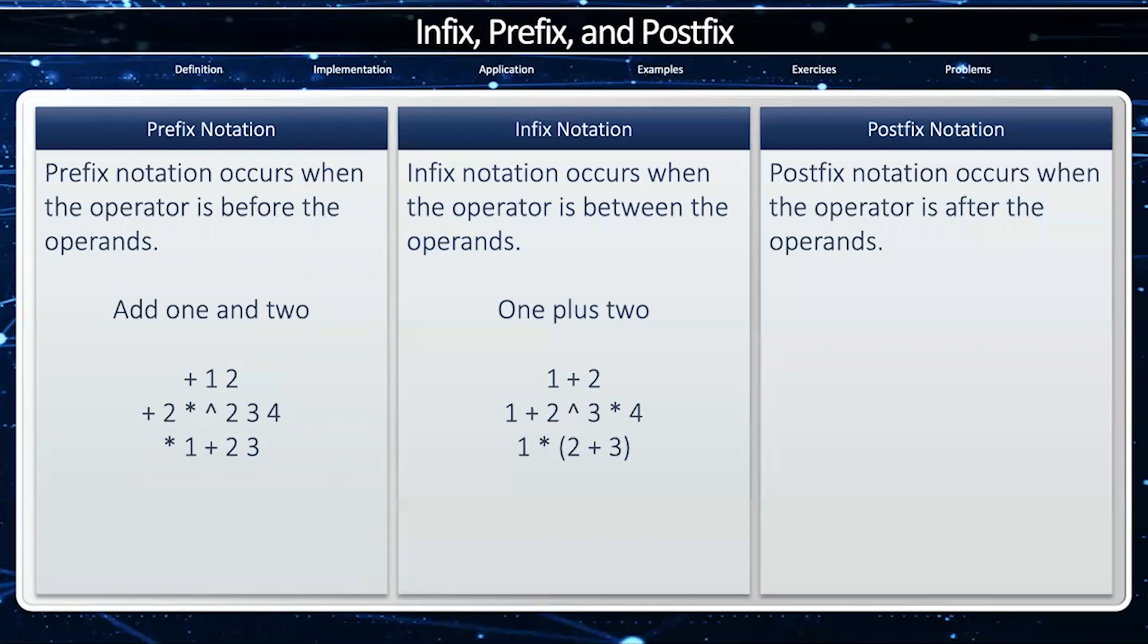Postfix notation occurs when the operator is after the operands. For an example, take one and two and add them. Notice how add is after the operands, or one two plus, or one two three to the exponent four times plus, and one two three plus times.